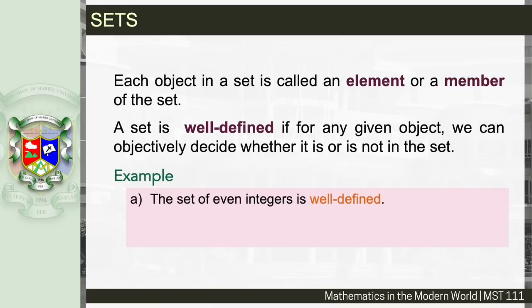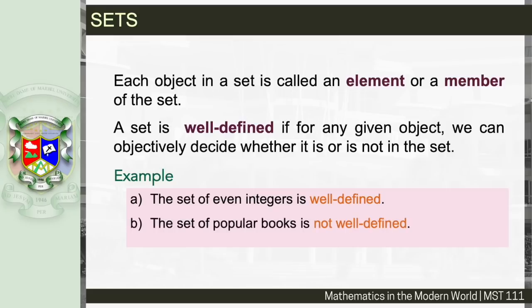For example, the set of even integers is well-defined because whenever you pick any integer you can say that specific integer is even or not. For instance, when you pick the number 20, 20 is certainly an even integer, while negative 5 is certainly not an even integer. Whereas the set of popular books is not well-defined, because whenever you pick an arbitrary book you are not certain whether it is popular or not — for some a book may be popular but for others it may not be.